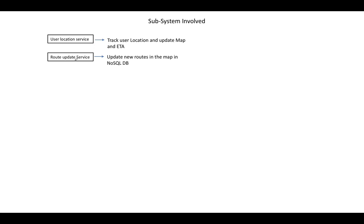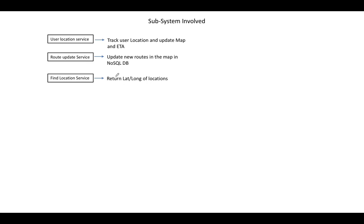The next service is the Route Update Service. Our map suggests a route to the user, but if the user has taken a new route, based on location updates we add that new route into our map service. If we suggested path A to B but the user took a more efficient path, this service captures those location details and updates the system. Then there is the Find Location Service, which returns the longitude and latitude for every specific point in the map. When a user selects a destination, it searches and returns coordinates, and we mostly use Elasticsearch for these geographic search queries.